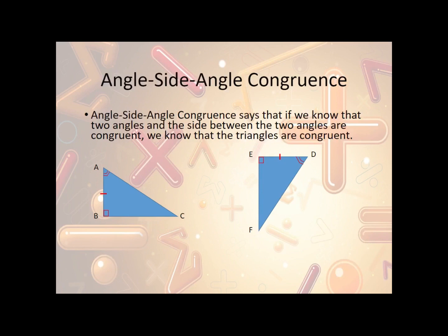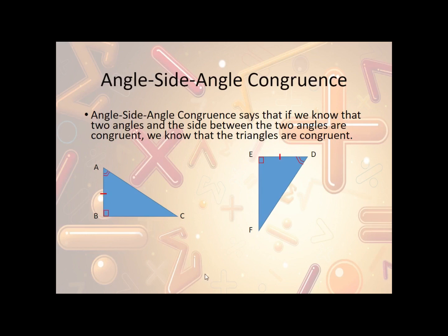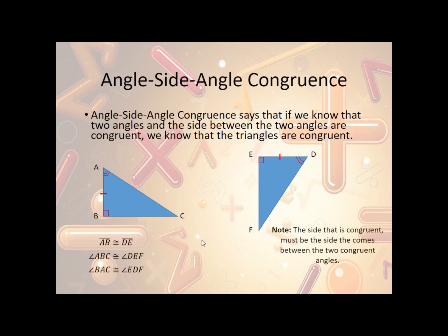Now let's take a look at angle-side-angle congruence. Angle-side-angle congruence says that if we know two angles and the side between the two angles are congruent, then the triangles are congruent. Order matters — the side we know must come between the two angles we know. So we know side AB is congruent to side DE, angle ABC is congruent to angle DEF, and angle BAC is congruent to angle EDF. Therefore, we can use the ASA theorem to state that triangle ABC is congruent to triangle DEF.